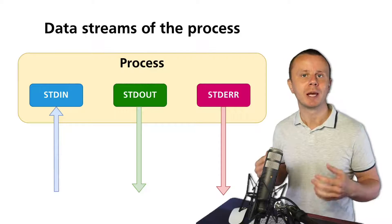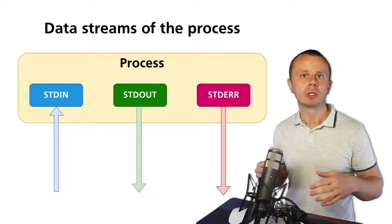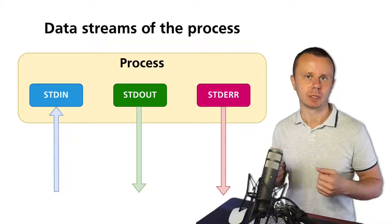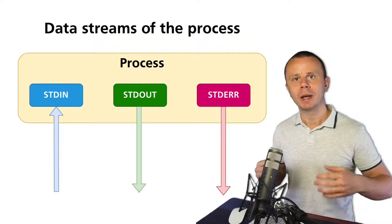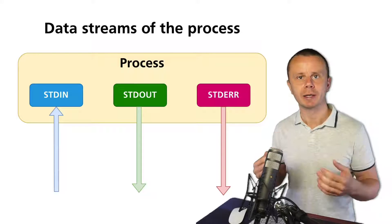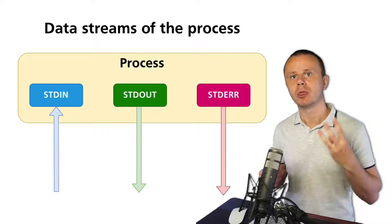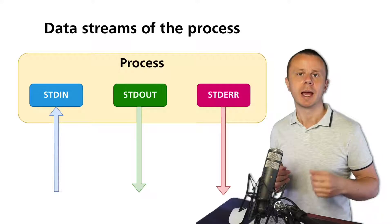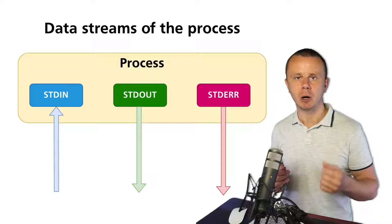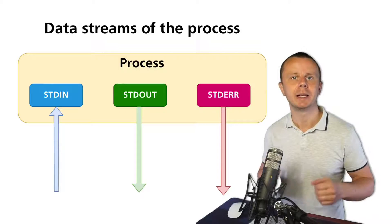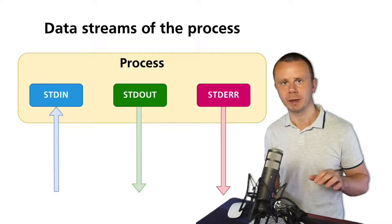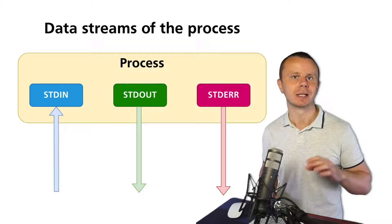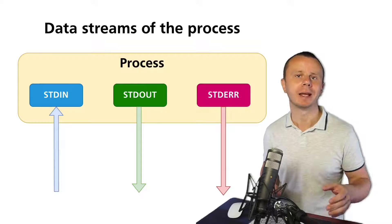When a process is running, there are three different data streams called stdin, stdout, and stderr. Those are the short names — the long names are standard in, standard out, and standard error.